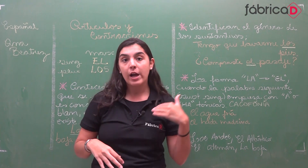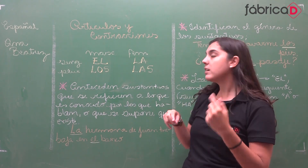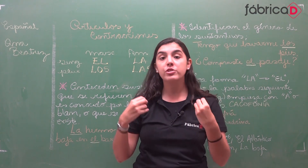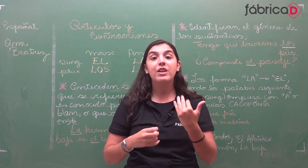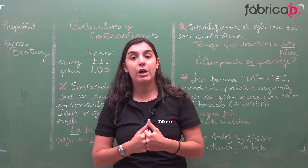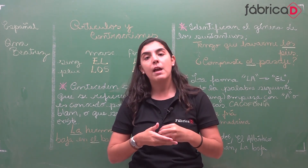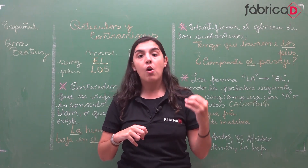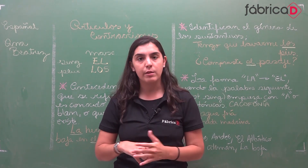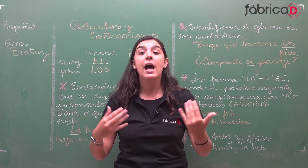Por que a gente usa o artigo? O artigo antecede o substantivo, que se refere ao que o falante disse ou que se supõe a dizer. No caso do artigo definido, ou artigo determinado, é sempre usado antes do substantivo determinado. Por exemplo, em português: 'o livro está na mesa' — é o livro específico, é determinado livro, e não 'um livro está na mesa', onde qualquer livro poderia estar.